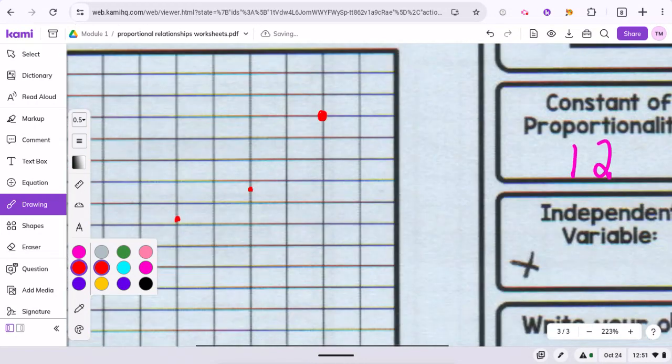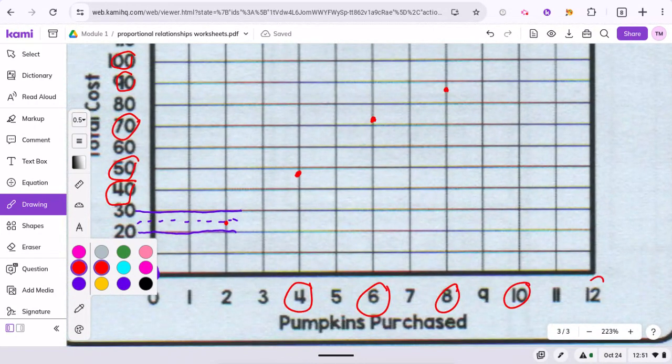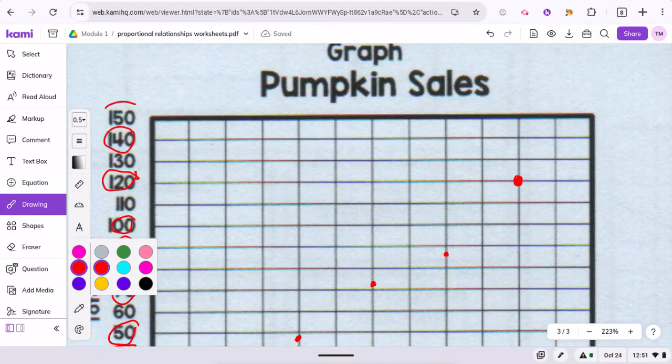And then lastly, 12 and 144. So 12 is the very last one. 140 is here. 150 is here. So it would go just under the halfway right about there.